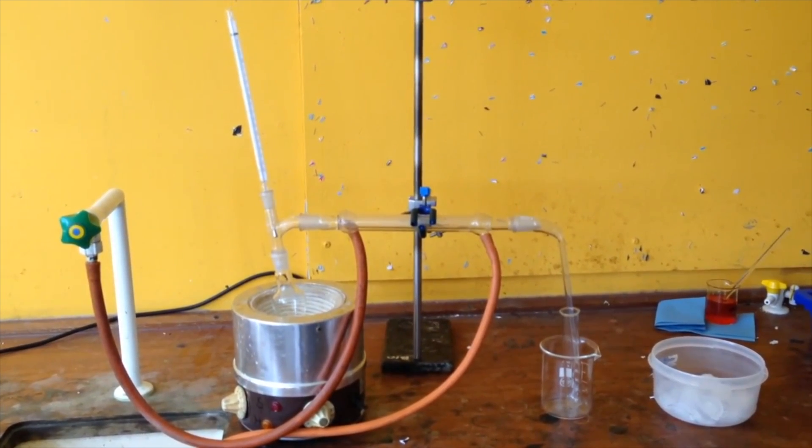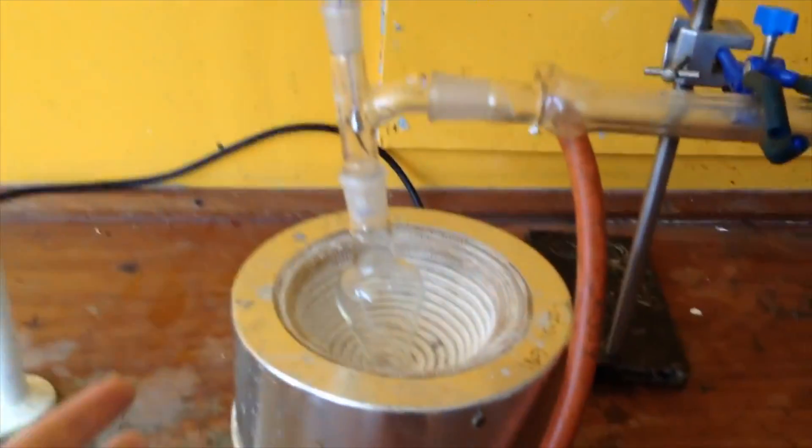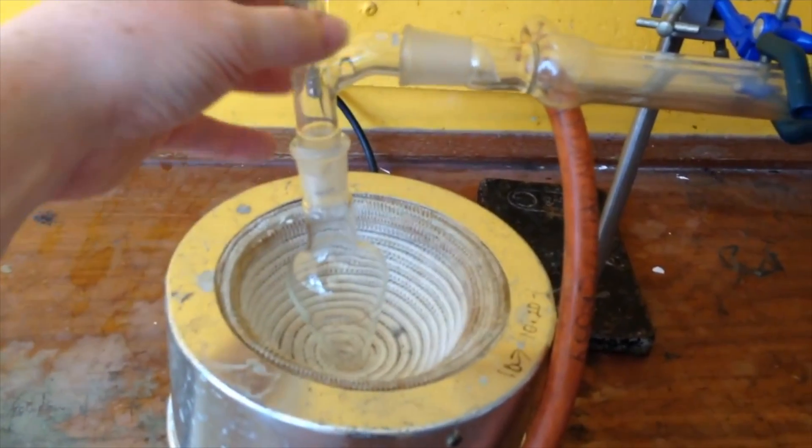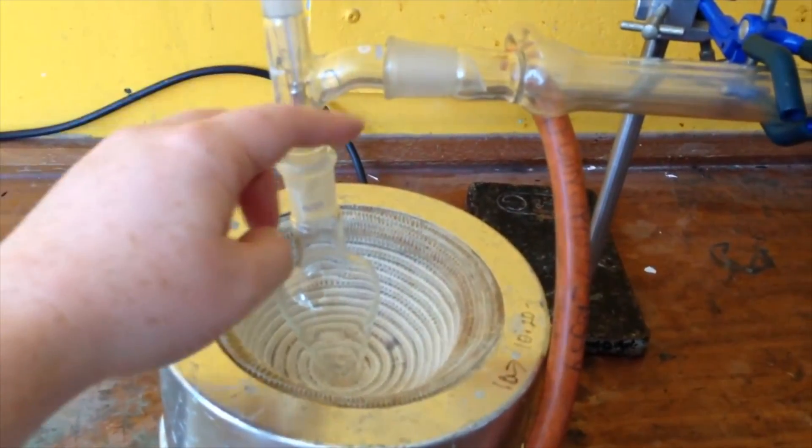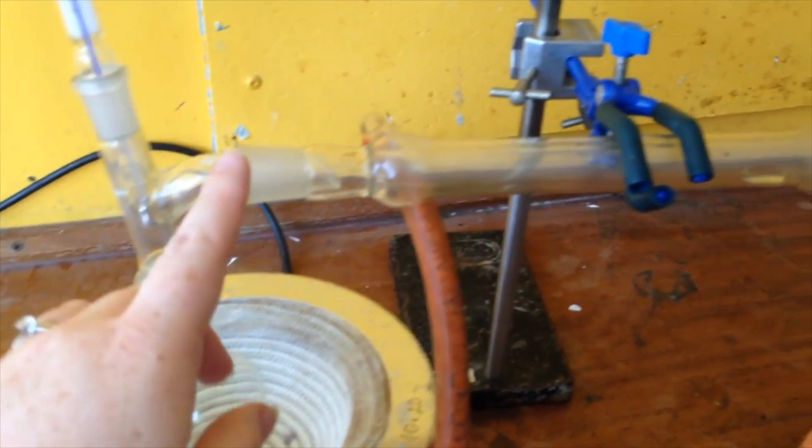So here we have the quick fit glassware set up for the distillation. I have the fancy heating device that I can never remember the name of, the pear-shaped flask going into the adapter here with the thermometer at the top there so I can check the temperature.